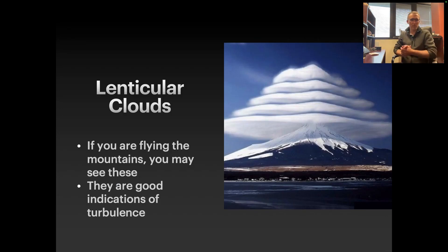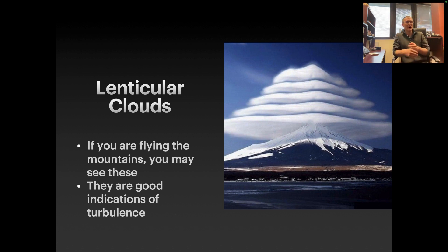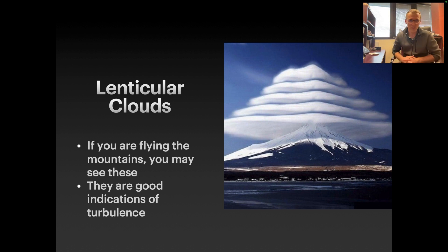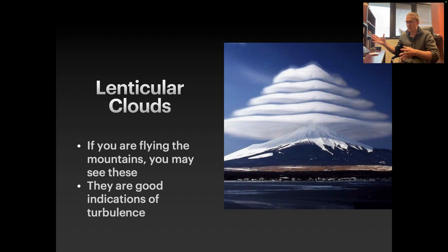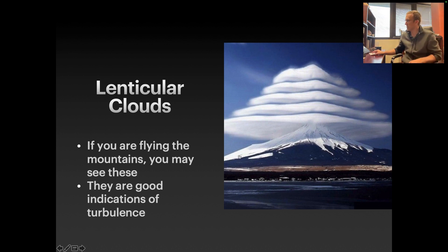One final type of cloud worth mentioning because they're unique: lenticular clouds, occurring only in mountainous areas. These are actually famous — or infamous — for being confused with UFOs, and have often been reported as UFOs by people who don't understand what they are. But these are good indications of turbulence. You have mountainous areas, air moving up and over the mountain, forming a very distinct type of cloud — very cool and very easy to notice.